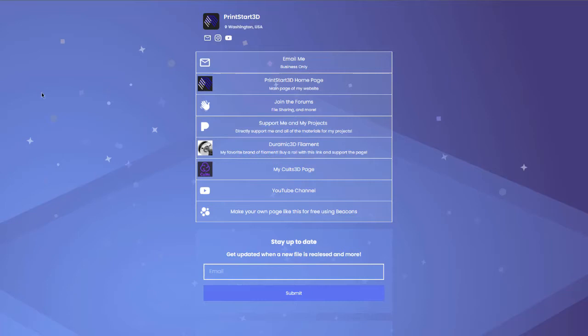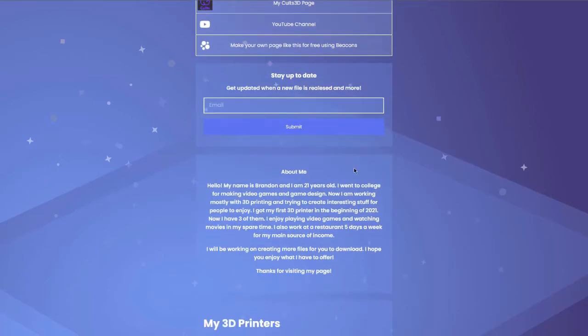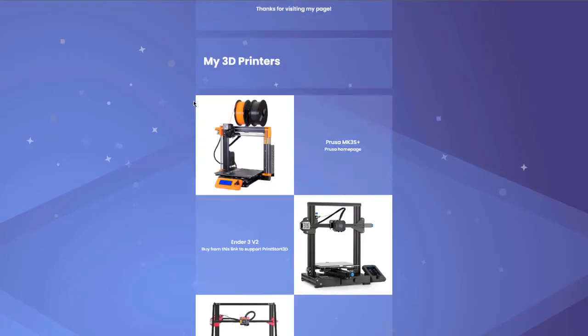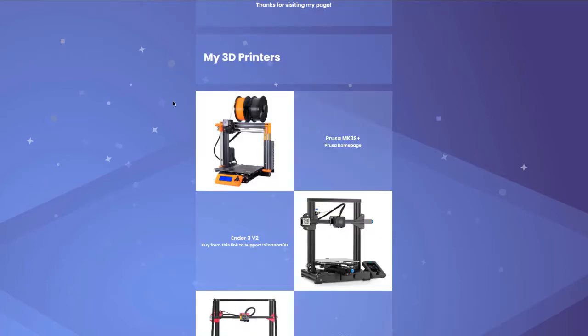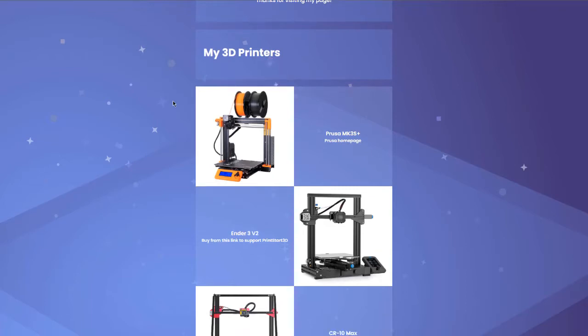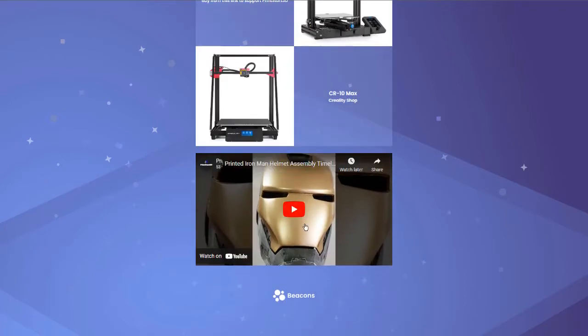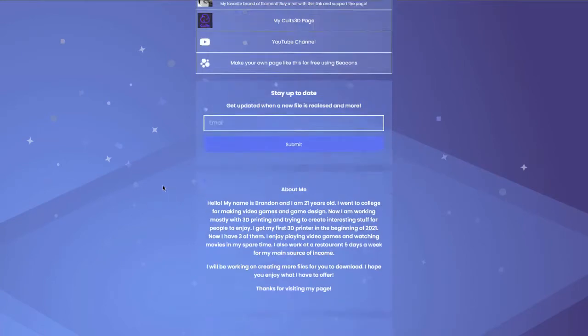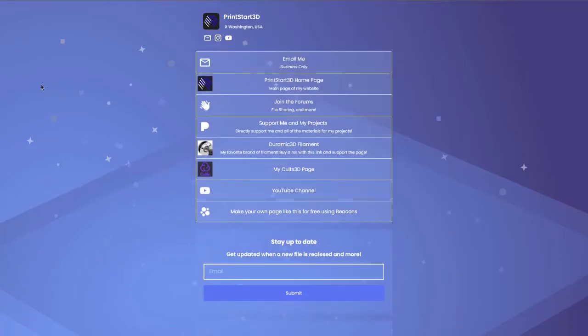I also wanted to show you this Beacons.ai page for Printstar 3D. It's a quick way to get all my links. There's my email here. You can also stay up to date when I release new files. There's an About Me page and a My 3D Printers page, which shows you which 3D printers I use. There's also a YouTube link here for my Iron Man helmet assembly. So let's get on with the video.